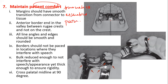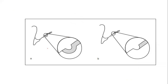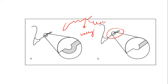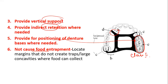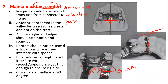The third requirement was to provide vertical support, then provide indirect retention. The fifth requirement was it should provide positioning of the denture base. The sixth requirement was that it should not cause food entrapment. The most important requirement was patient comfort — it should be compatible with phonetics, aesthetics, and should not cause pain. We made the margin smooth with smooth transition from connector to tissue, smooth internal line angles, hid extensions within embrasures, and ended the major connector on the posterior slope of the rugae.